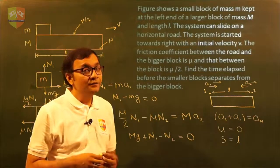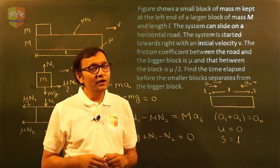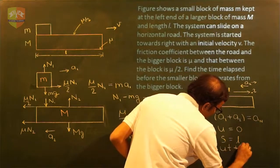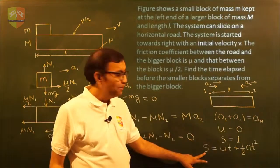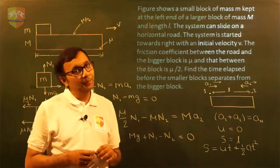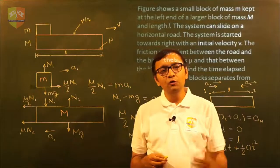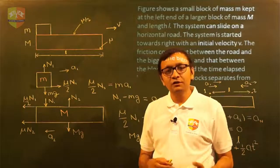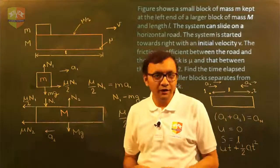Using the kinematic equation s = ut + ½at², substituting s = L, u = 0, and a = a1 + a2, we can solve for the time t. This is how you solve this particular problem. Thanks for watching — we'll come back with more problem-solving videos testing different concepts.